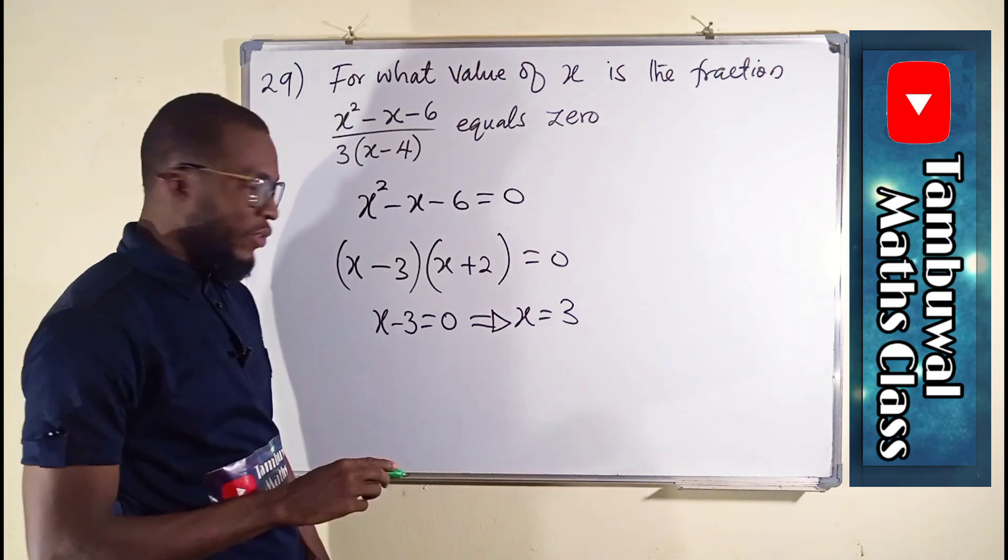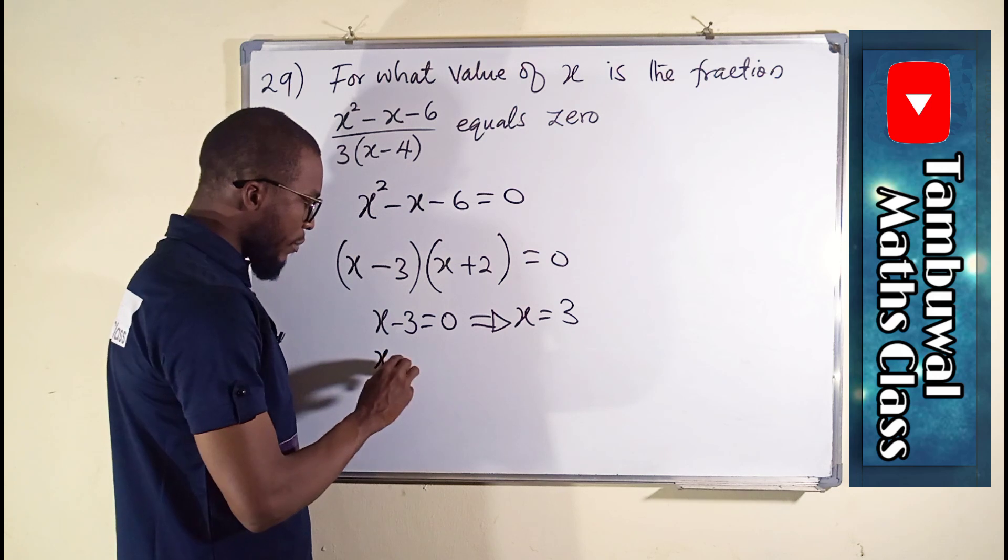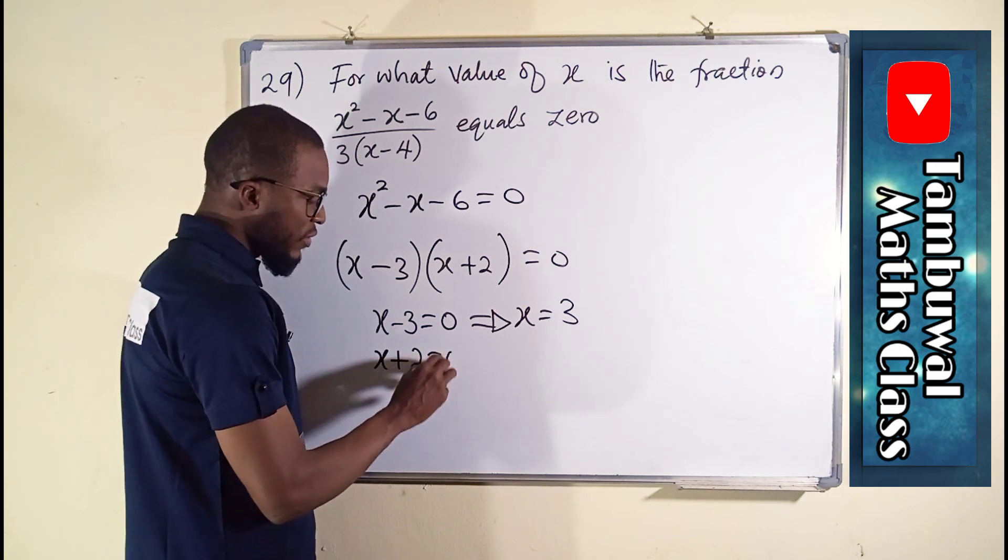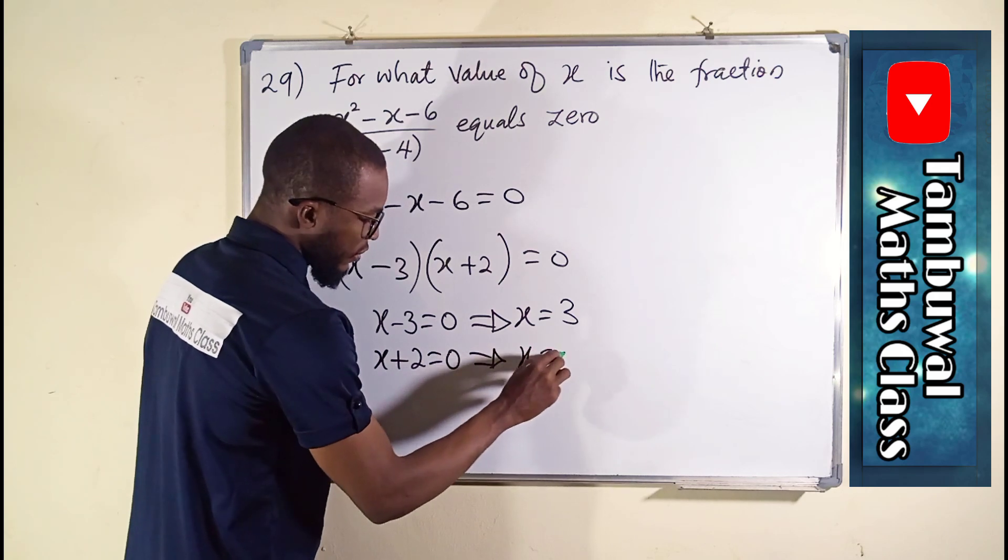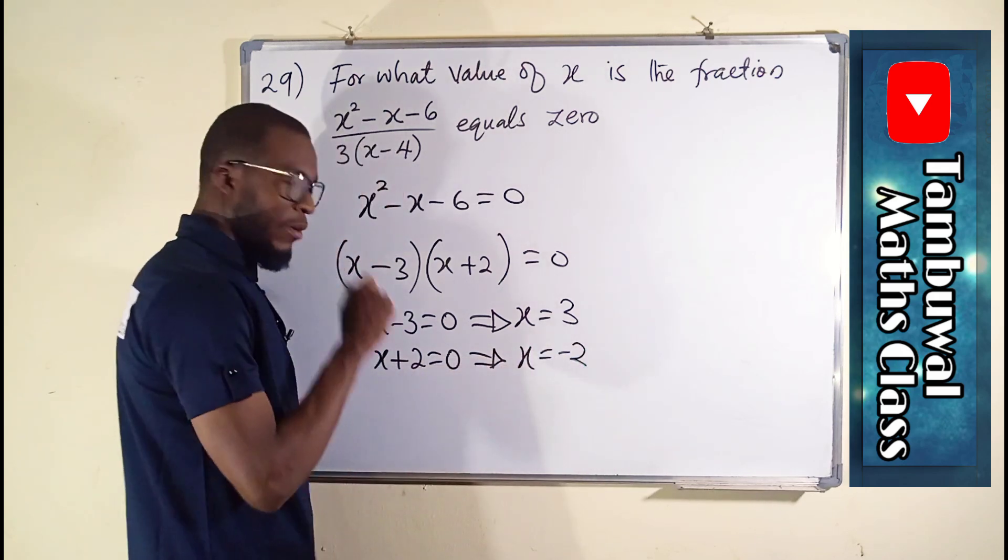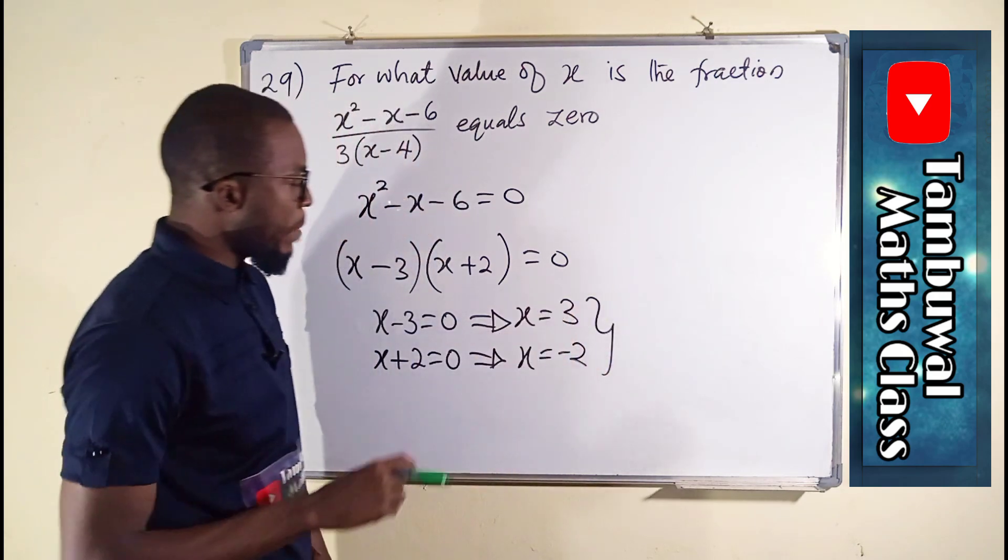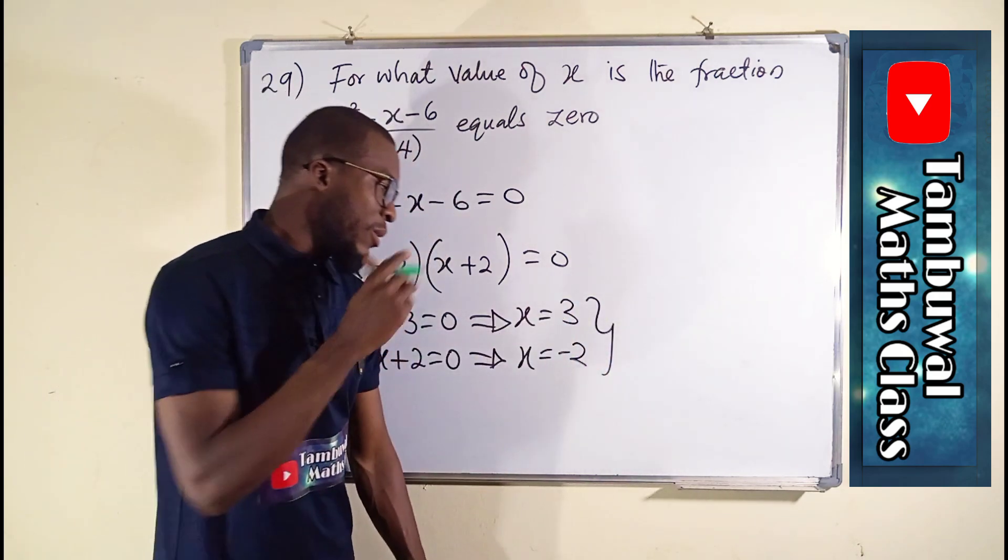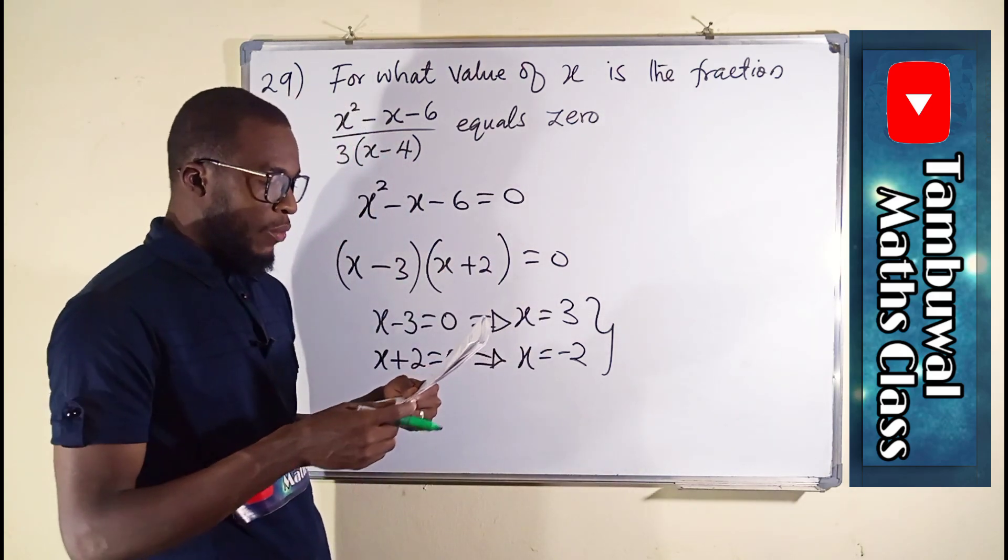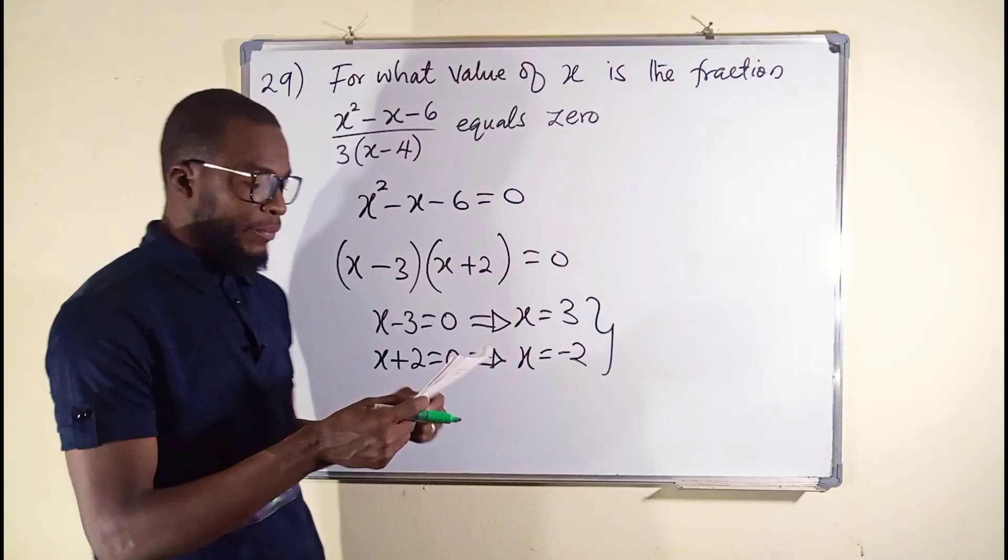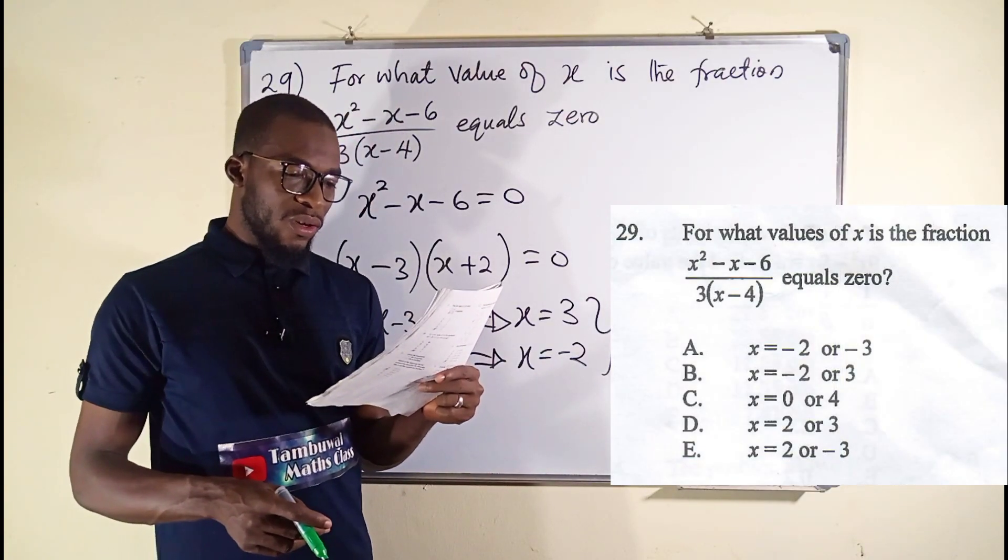The other one, x plus 2 equals 0, implies that x equals minus 2 when positive 2 crosses over the equality sign. These are the required solutions: x could either be positive 3 or negative 2, which we have here as option B.